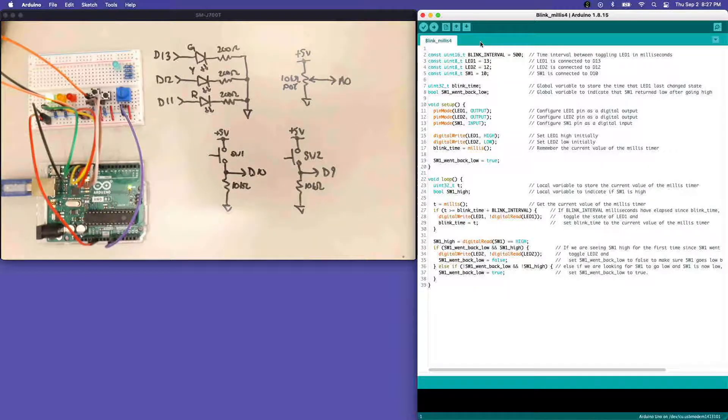In this video we're going to continue on with our sequence of blinky LED sketches. This will be our fourth one, where instead of having tactile switch one directly control the value of LED two, the yellow one, we're going to make tactile switch one toggle the state of LED two.